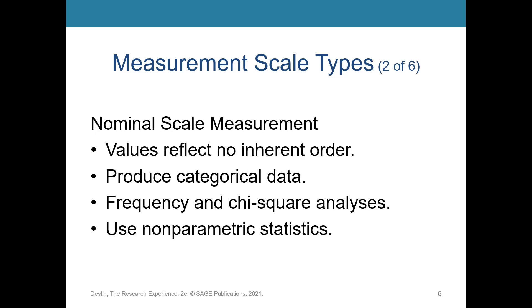Nominal data has no inherent order — it produces categorical data. Usually what you can do with this is a frequency analysis, chi-square analysis, or a non-parametric statistic. An example might be: do you own a car? Your answer is yes or no. You might ask about someone's sex — male or female. Maybe it's political affiliation — Republican, Democrat, liberal. The key is you have to be in mutually exclusive categories; you can't be in both. That's a hallmark of nominal scales of measurement.